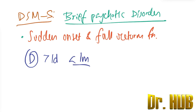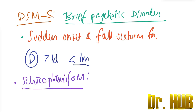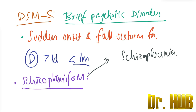Next we move on to Schizophreniform Disorder. Schizophreniform Disorder has the same symptoms as schizophrenia, but functional decline is not required. The duration lasts from greater than one month and less than six months.